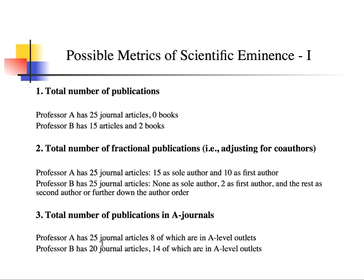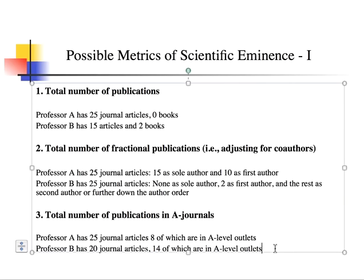For example, Professor A has 25 journal articles, eight of which are in the relevant A-level outlets, whereas Professor B has 20 journal articles — fewer in total — but 14 of which are A-level outlets. So if we're only looking at total peer-reviewed articles, Professor A would win, but if we're looking only at A-level outlets, Professor B would win.